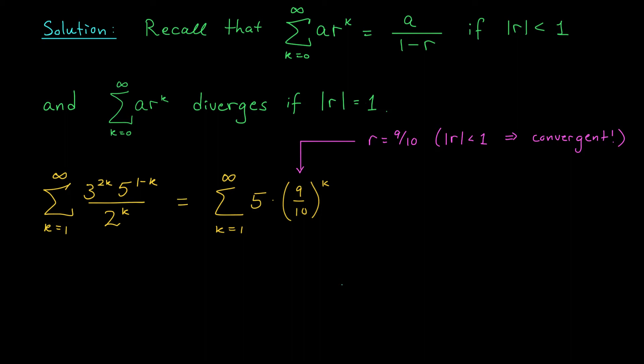We have a couple options. One thing that we could do is add and subtract the k equals 0 term to make our sum look a little bit more like this. When I set k equal to 0, I get 5 times 1.